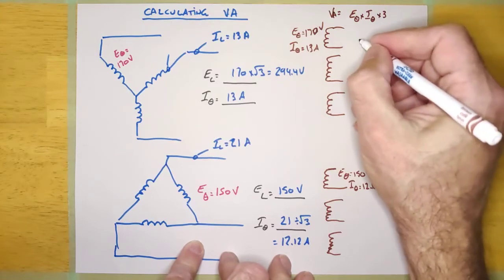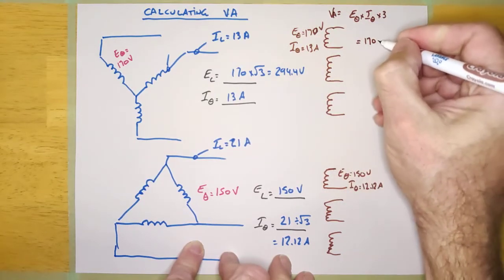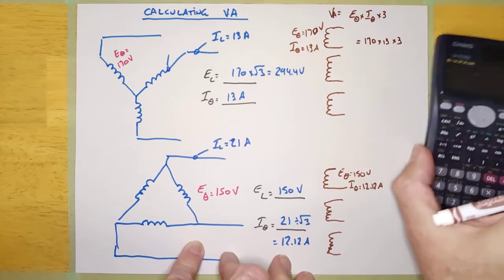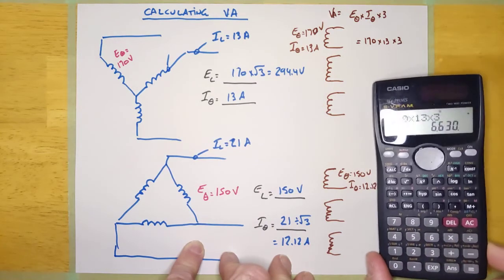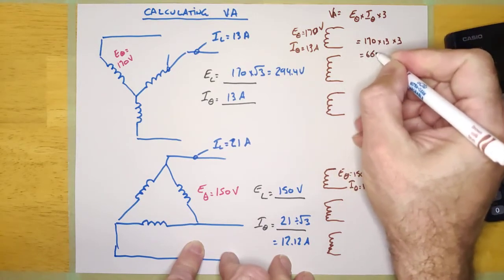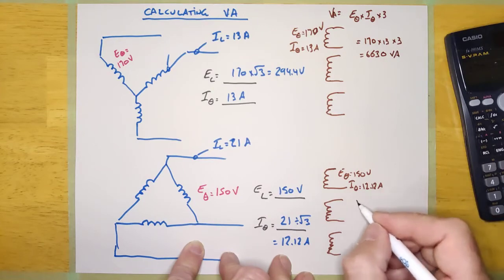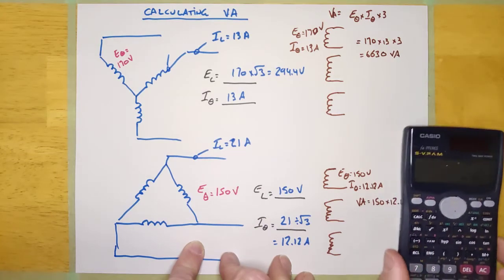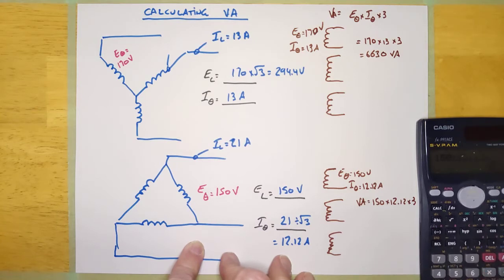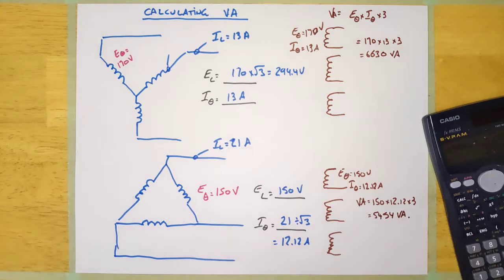For the Y system, it's going to be 170 times 13 times 3 — that gives us 6,630 VA. And for the Delta system, the VA will be 150 times 12.12 times 3, which equals 5,454 VA. That formula will always work, but it's not the handiest formula in the world.